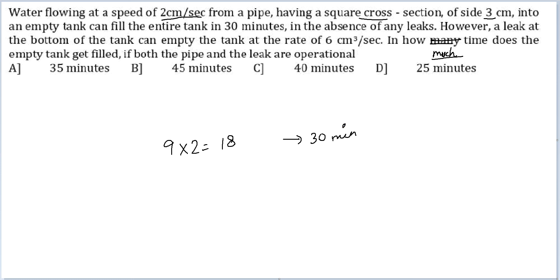But now because there is a leak also operational, 6, so the water will now be going at the rate of 12. The ratio here is 3 is to 2, so the time taken should be 3 is to 2, inverse ratio.